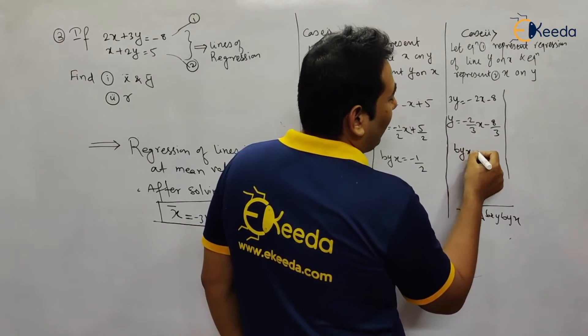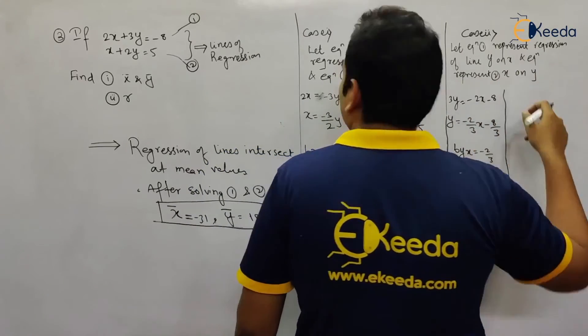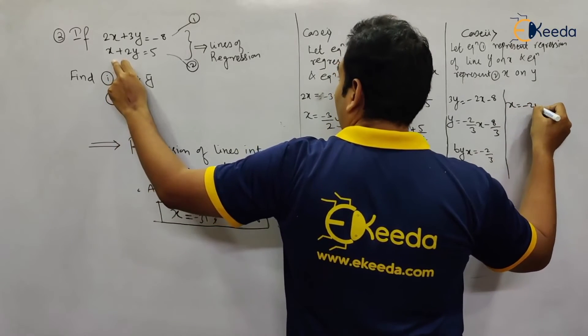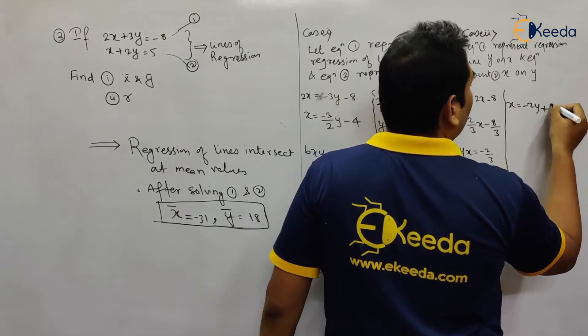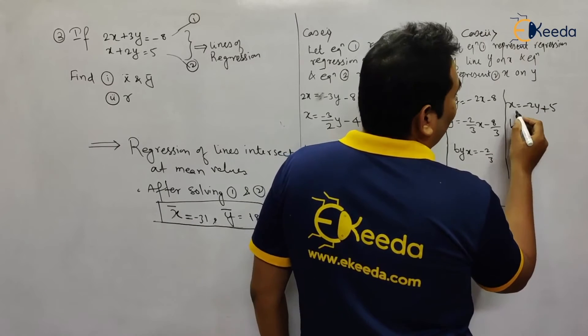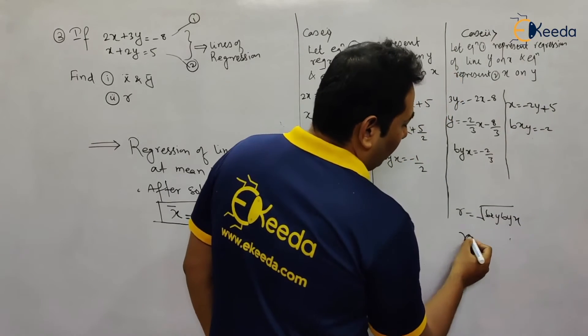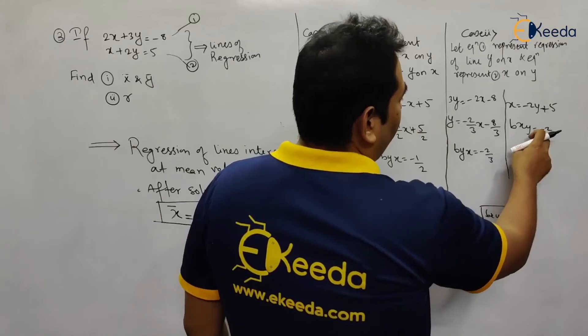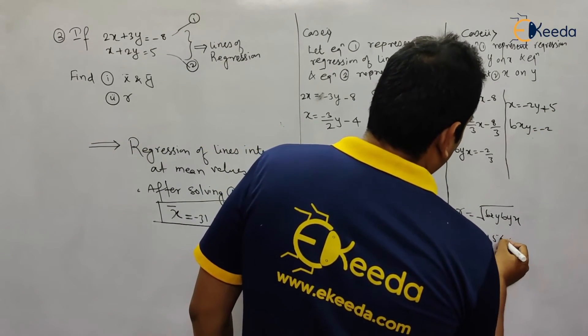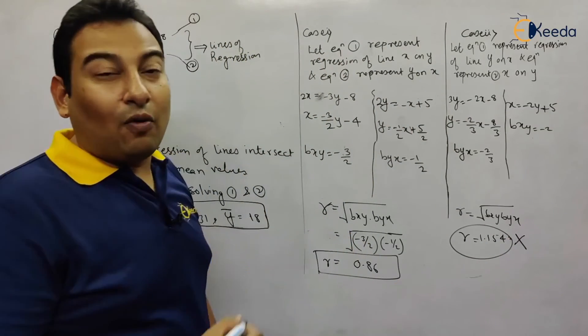From this, byx is -2/3. But equation 2 represents x on y, so x is on this side: x = -2y + 5. From this, bxy equals -2. If you put these values into the square root, you get 1.154, which is obviously rejected because r ranges from -1 to 1.